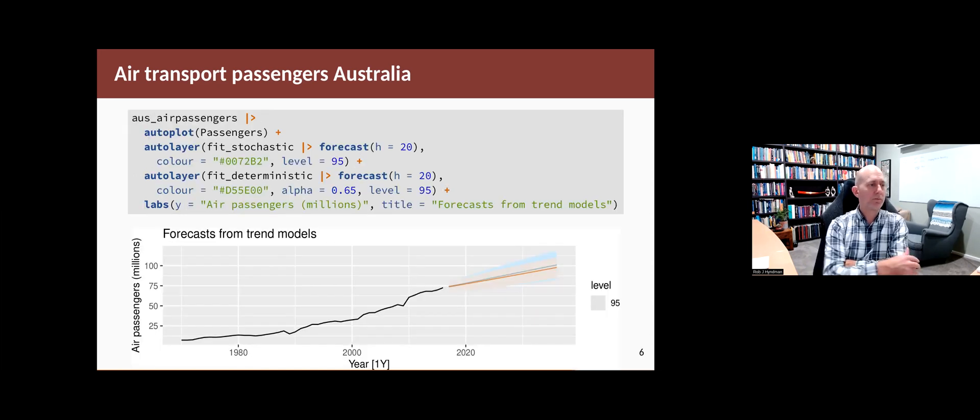When we come to plot the forecasts, you can see what's going on. As I said, the slopes are pretty similar, so the point forecasts are not very different. But the prediction intervals are quite different. The prediction interval there is much smaller than the prediction interval in blue, which is from the stochastic model.